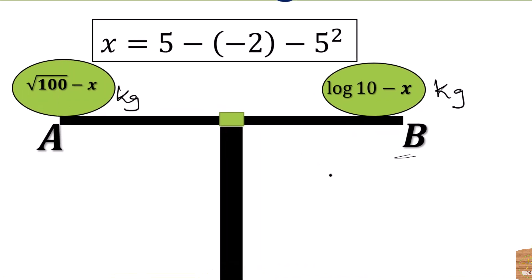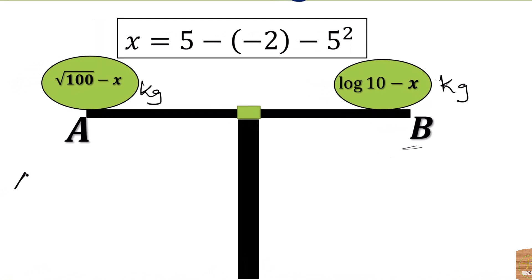We have the mass of A to be square root of 100 minus X. So we have square root of 100 minus X in kilograms. So square root of 100 is 10, minus X in kilograms.